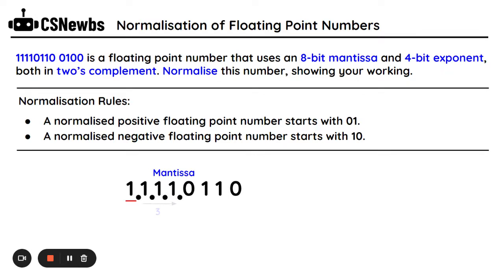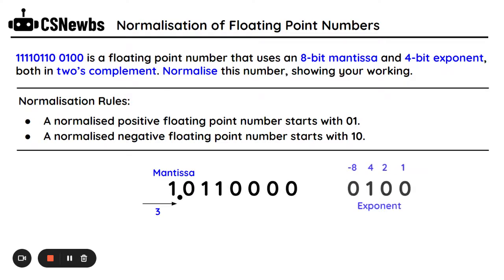So I put in my decimal point, and I need to move it along until it is between a 1 and a 0. I need to move it once, twice, three times. I've had to move it three times. I can remove the dots and the leading zeros — this is the start of my mantissa. Because I've had to remove three values from the front of the mantissa, I need to add three values to the right, and these are always going to be zeros.